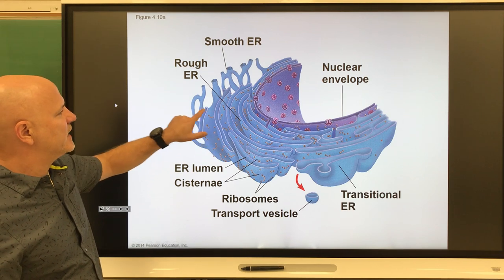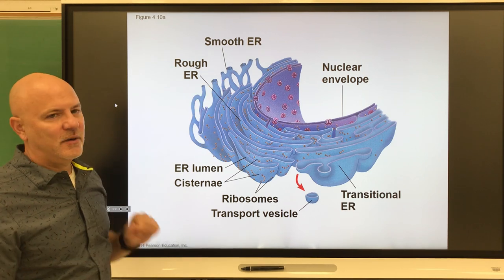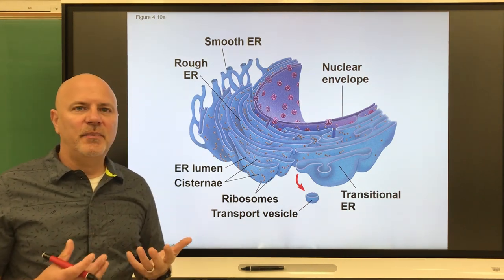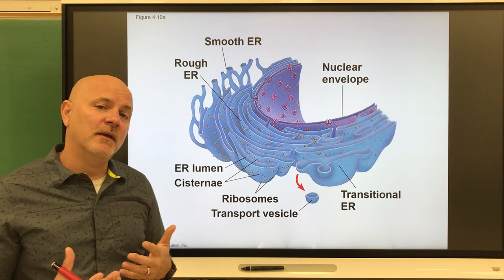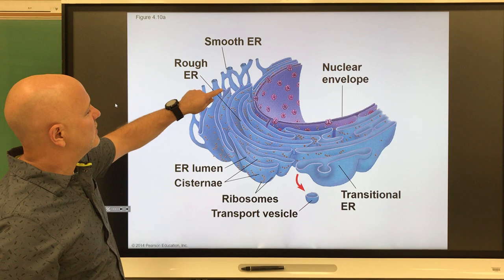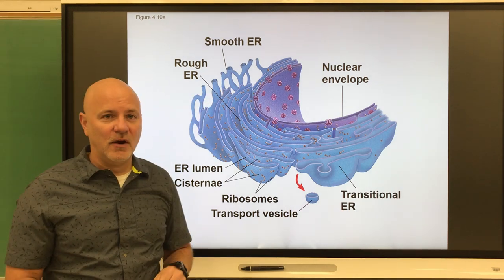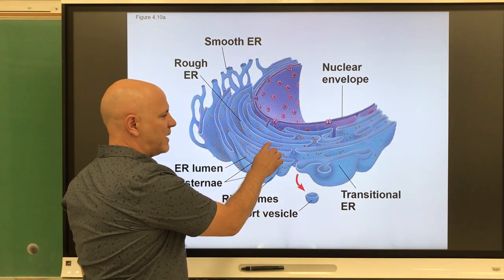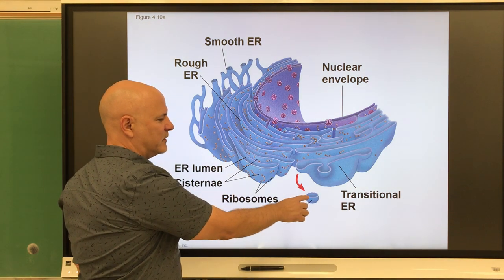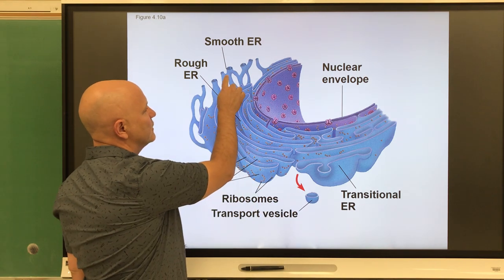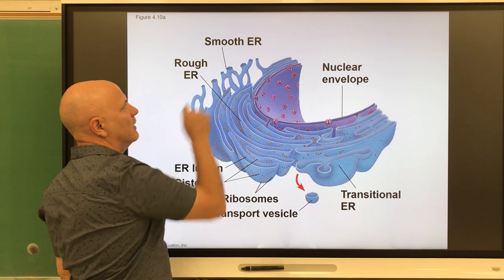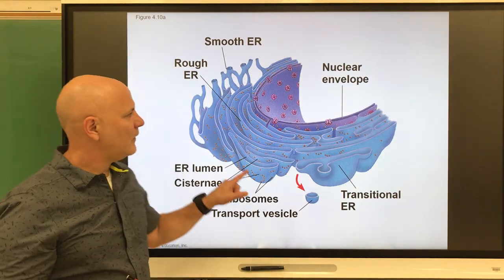Connected to the rough endoplasmic reticulum is the smooth endoplasmic reticulum, which is an organelle that synthesizes lipids — fats and oils — and also phospholipids. The rough ER, with those ribosomes attached, makes proteins and packages them into vesicles. The phospholipids to make those vesicle membranes are made by the smooth endoplasmic reticulum.